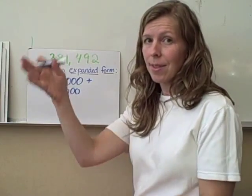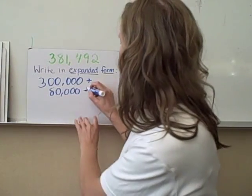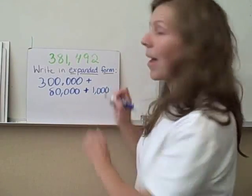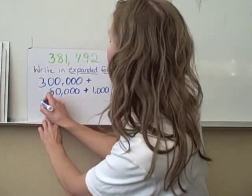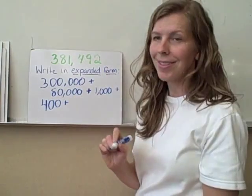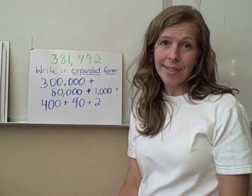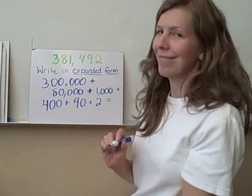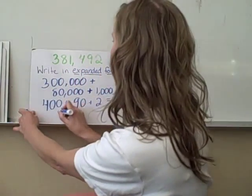In your books you'll see them all strung together in a very long expanded form. Plus, we've got the 1 in the thousands place, so we add 1,000. Plus we have a 4 in the hundreds place, so plus 400, plus 90, plus 2. If we add up all of these numbers together, we get 381,492.